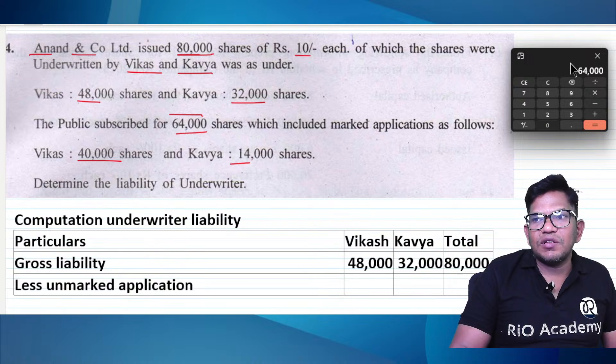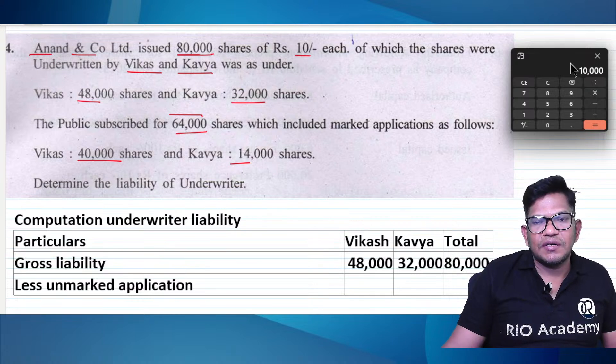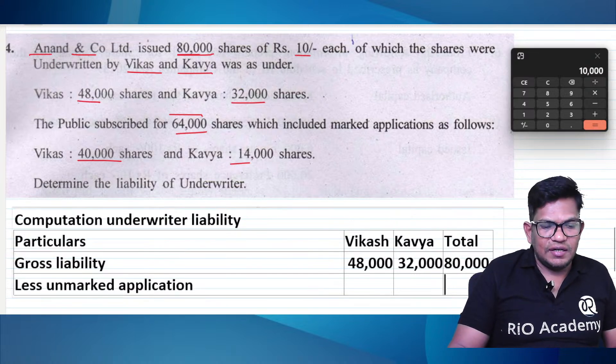64,000 lali minus 40,000 minus 14,000 — that is 10,000.